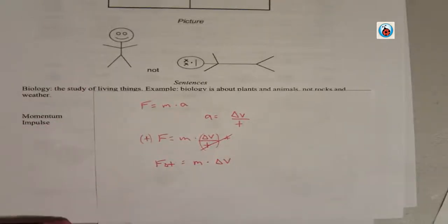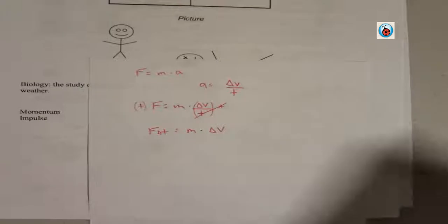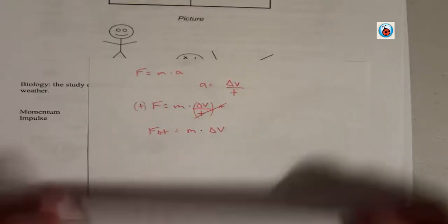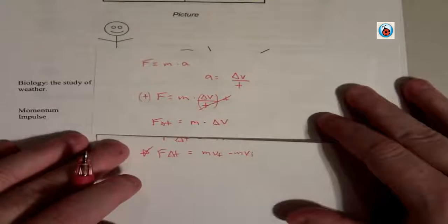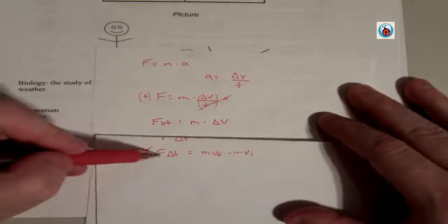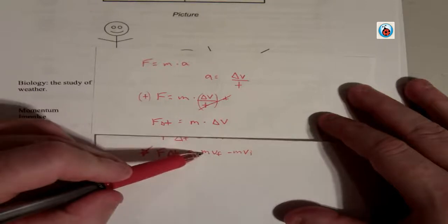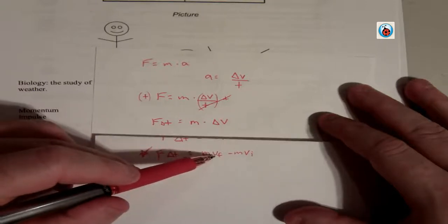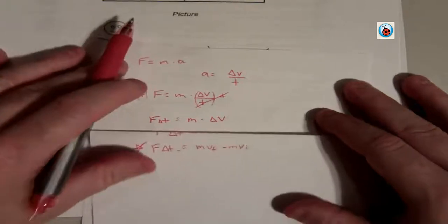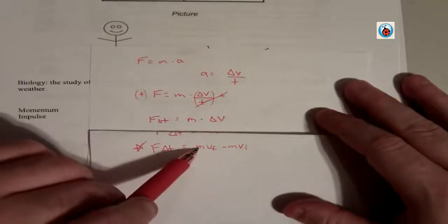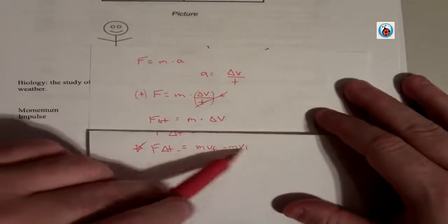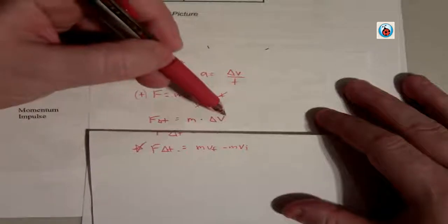And if we bring back our initial paper, isn't that pretty much the exact same? Force times the change in time equals mass times the velocity. And this is just the change in velocity. Mass times the final velocity minus mass times the initial velocity. That's the same thing. Change in velocity.